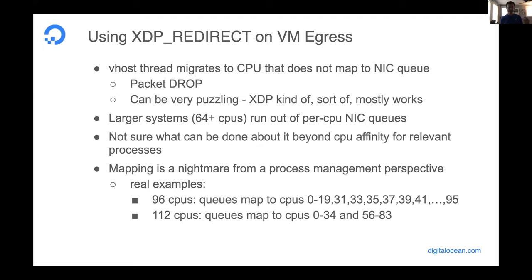We need to be thinking about how to address this problem. Maybe it's just a matter of always setting CPU affinity on the vhost threads, but even that is not a simple solution because the mapping of NIC queues to CPUs is a nightmare. For example, one server with 96 CPUs has a mapping starting at zero to 19 then all odd logical CPUs ignoring a NUMA domain. A different server with 112 CPUs needs a completely different mapping. The software has to figure out which CPUs the vhost thread can run on, which also gets into other management aspects of how you're setting up your cloud host.